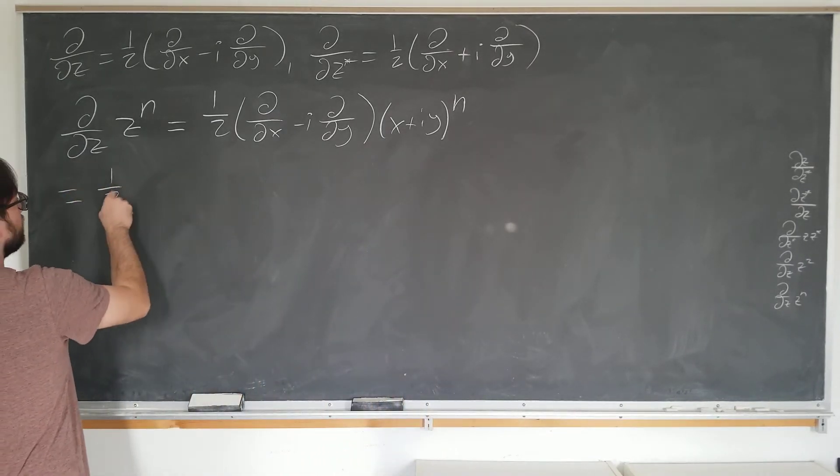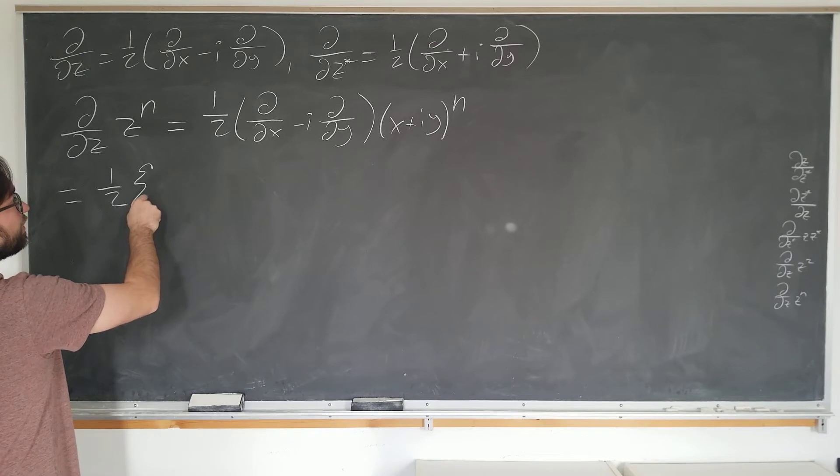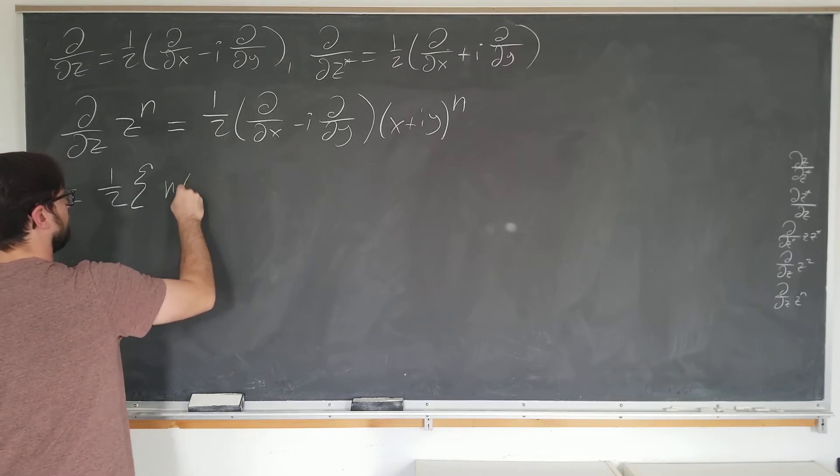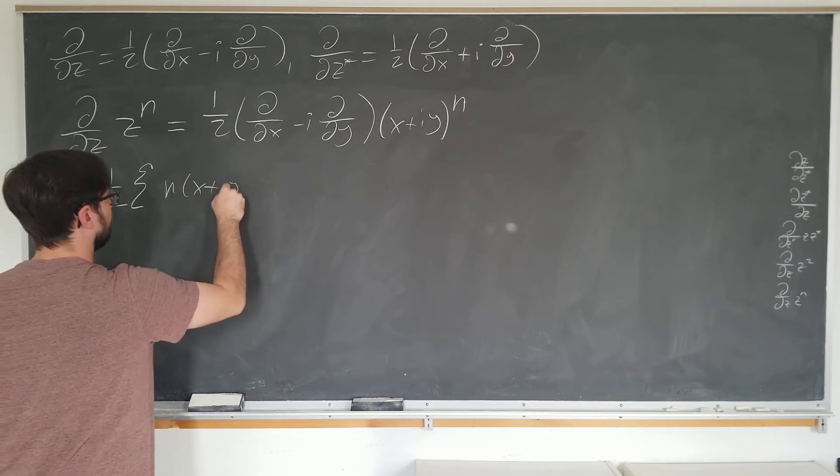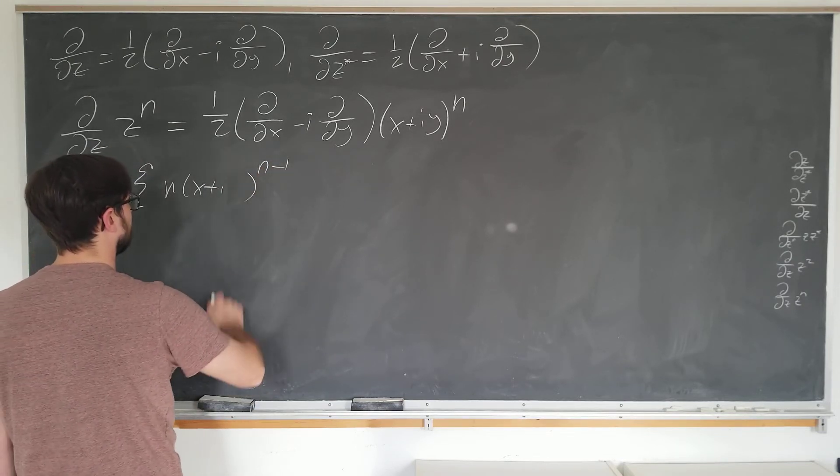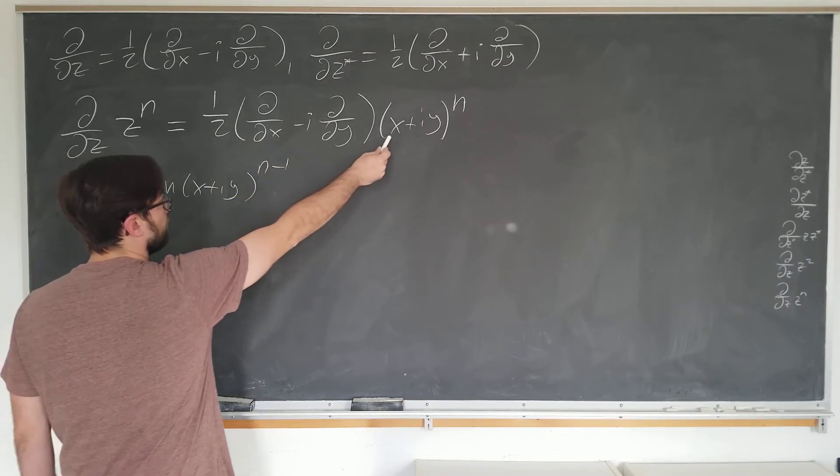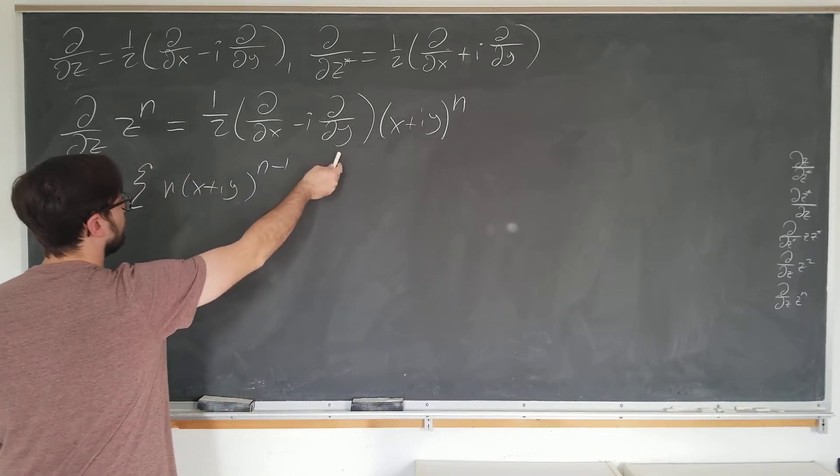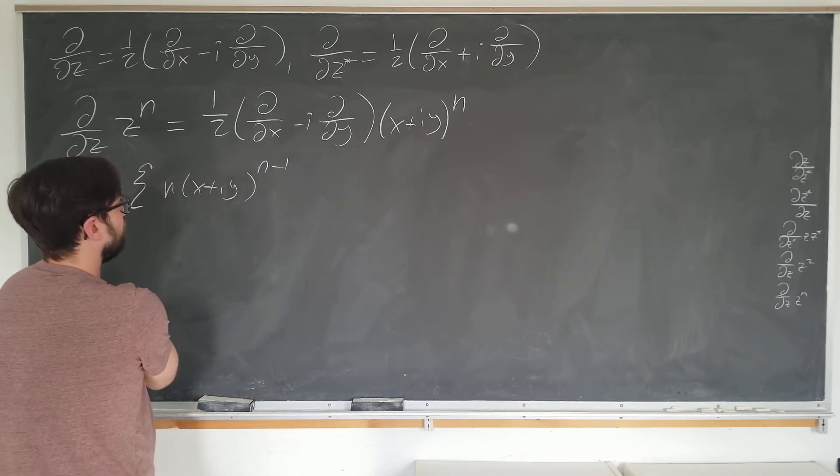So if I do this, it's just going to be one half. We have n times x plus i y to the n minus one here. This is with the d by dx operator, and the derivative of z with respect to x is one, so no term needed there.